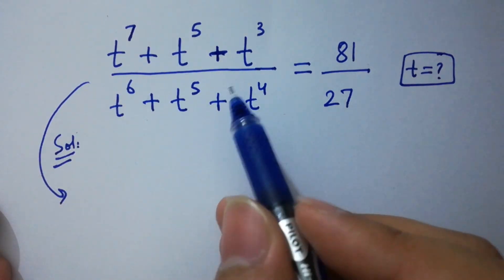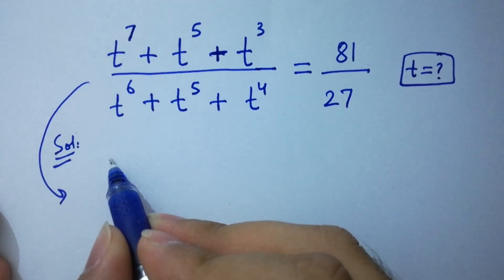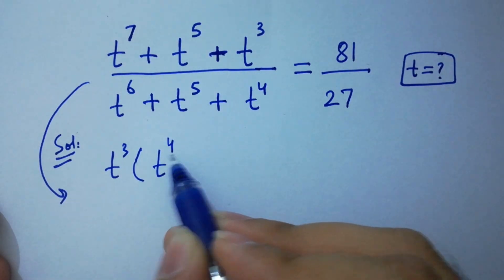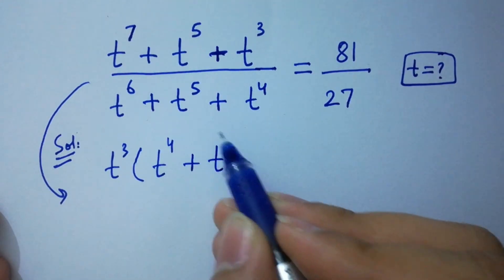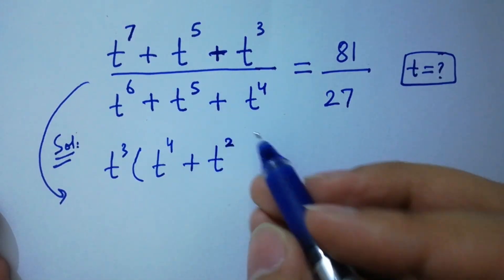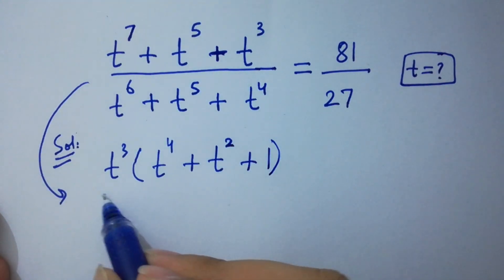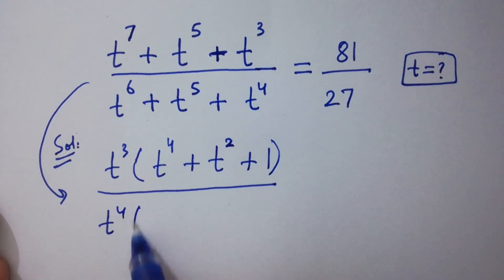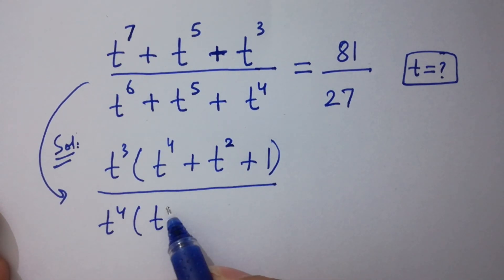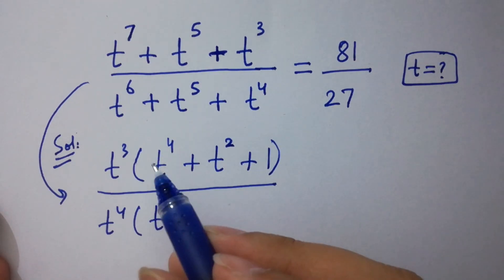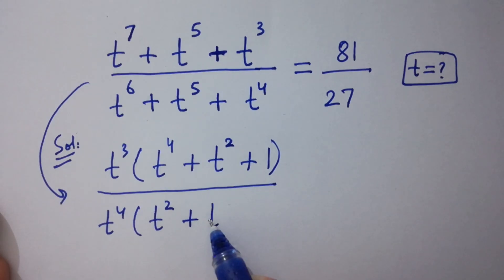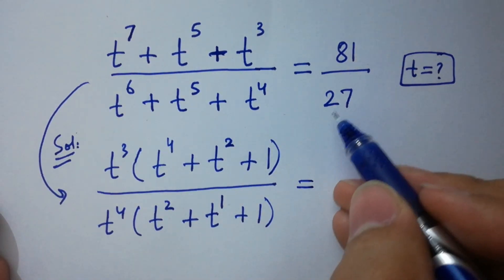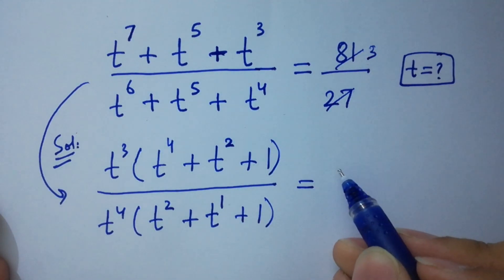To solve this, in the numerator, t³ can be common: t³ times (t⁴ + t² + 1), because 3+4=7 and 3+2=5. In the denominator, t⁴ can be common: t⁴ times (t² + t + 1). And 81 over 27 simplifies to 3.